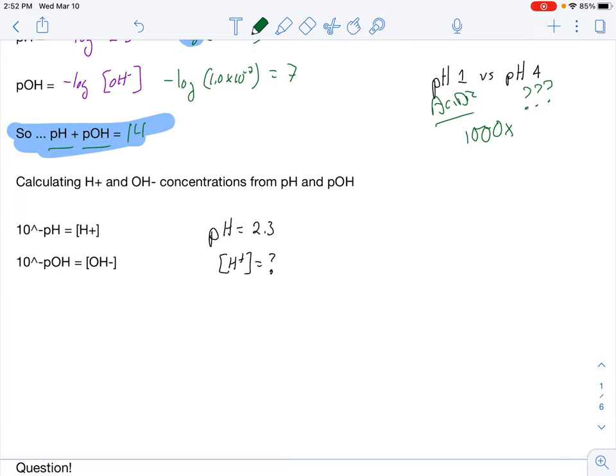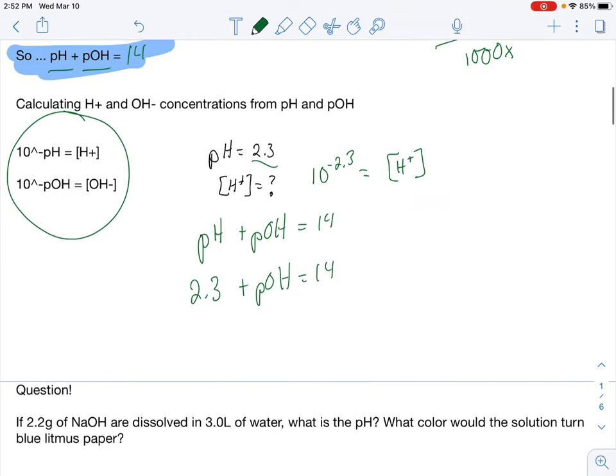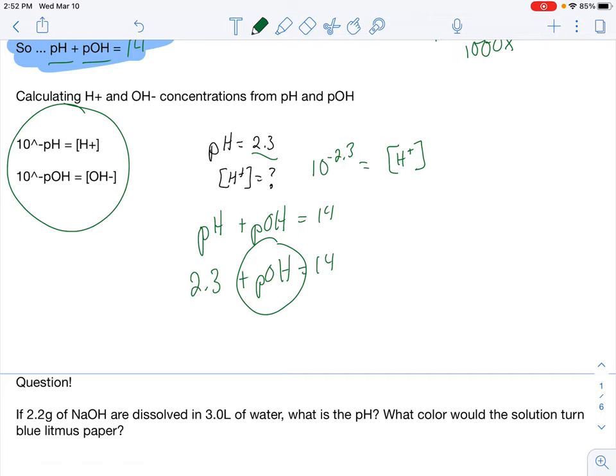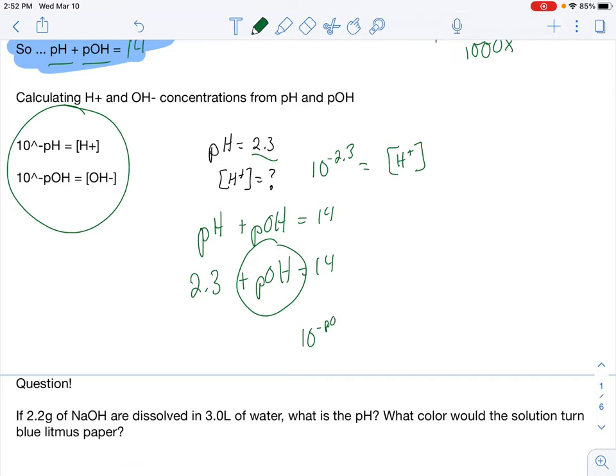Now, we can also work in reverse. So if I have a pH, I should be able to work backwards and find my concentration of hydrogen ions. Here are the formulas to do that. If I take my pH, whatever value it is, 2.3, and I do 10 to the negative 2.3, put it in my calculator, that'll give me my concentration of hydrogen ions. Pretty neat. If I have my pH and I'm looking for my concentration of hydroxide ions, there's a couple different ways you can do it. The easiest way you can do it is realize that your pH plus your pOH is going to equal 14. So if I plug in 2.3 here plus pOH equals 14, I could solve for my pOH pretty easily, and then I would take 10 to the negative pOH value, and that would give me my concentration of hydroxide ions.